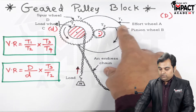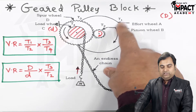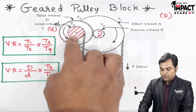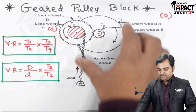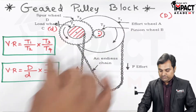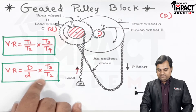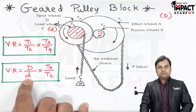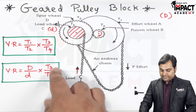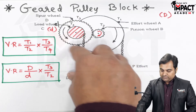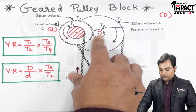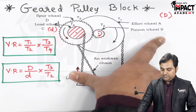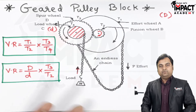So if instead of gears on the effort wheel and load wheel we have simply pulleys, the velocity ratio formula is: capital D (diameter of effort wheel) divided by small d (diameter of load drum), multiplied by T3 (number of teeth on spur wheel D) divided by T2 (number of teeth on pinion wheel B).